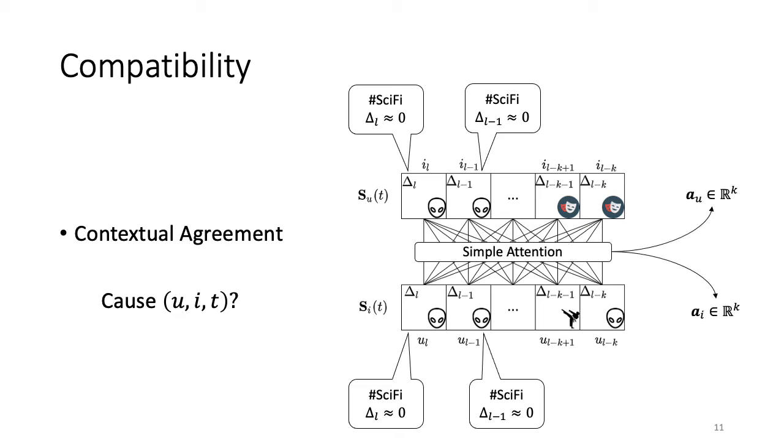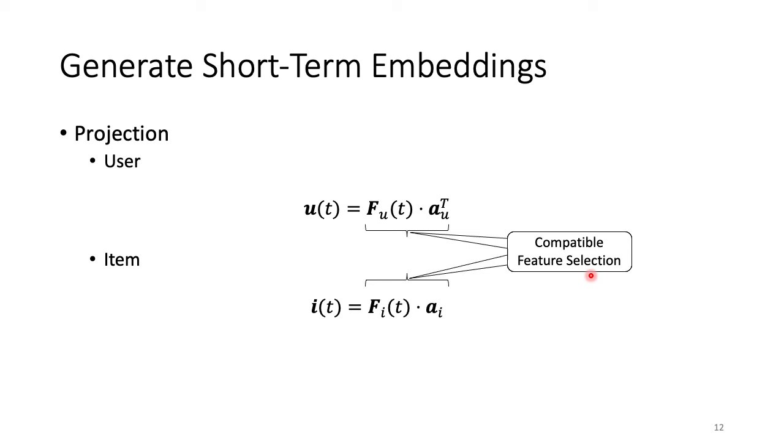And this allows us to derive a k-dimensional attention weight vectors, which encode the impact of each of the recent events in causing the current event that happened at time t. Finally, we use the attention coefficients to compute the weighted sum of the high-level features and project the user item embeddings at time t as shown here. Therefore, we can see that by relying on the semantics of recent events, we have effectively removed the recursive dependency to learn these dynamic embeddings.